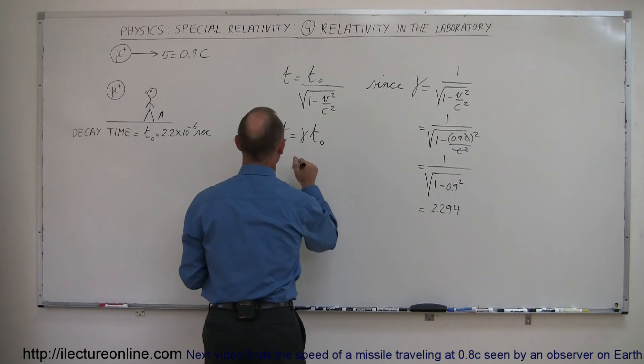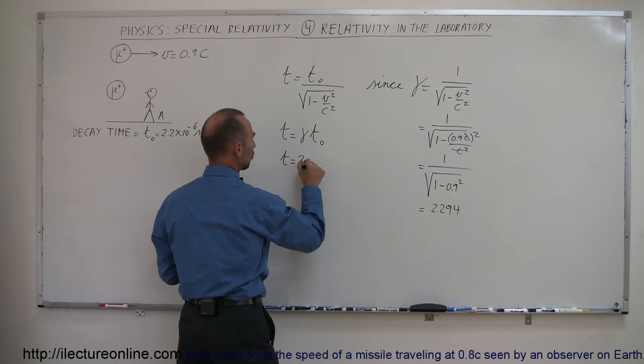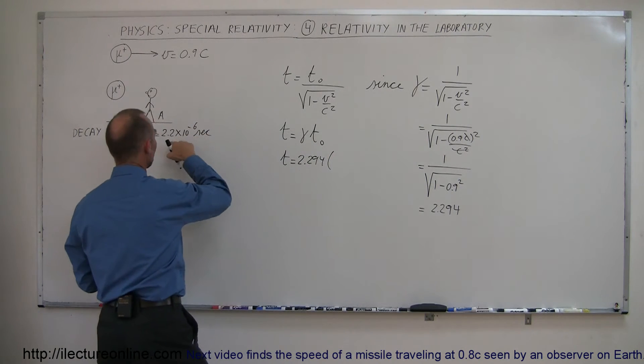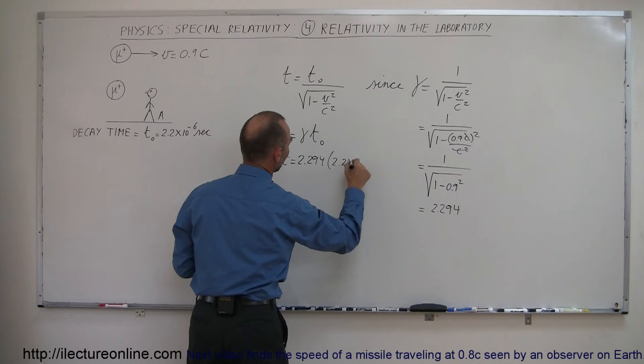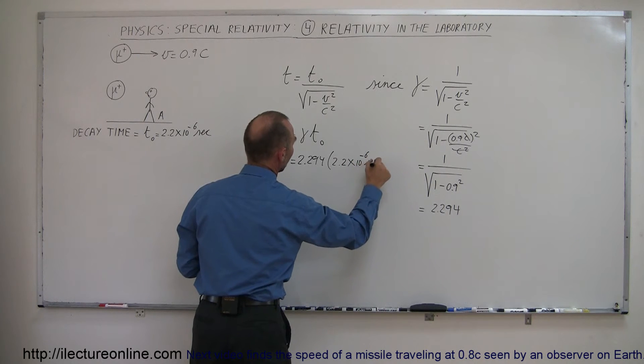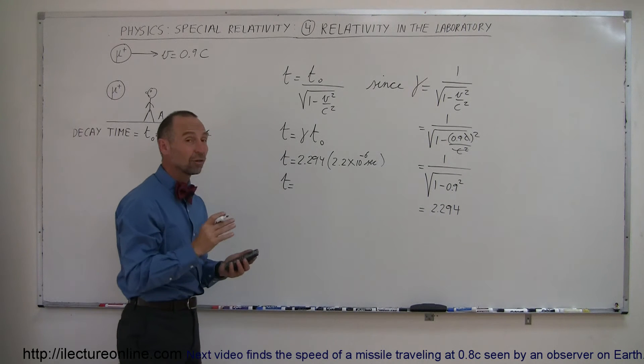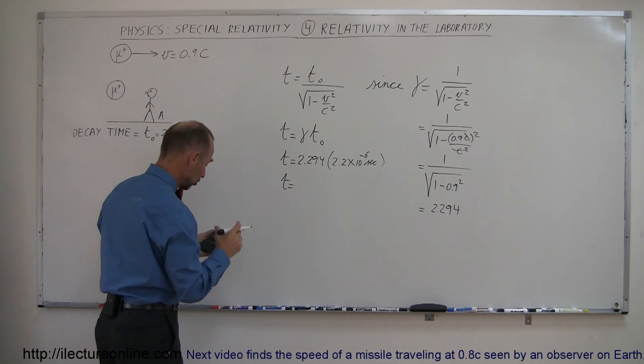We plug that in here, so we can say that t is equal to 2.294 times t sub nought, which is the time that exists when it's at rest. And so now you can see that that particle when it's moving really fast will actually exist longer in the laboratory and therefore be able to travel farther.